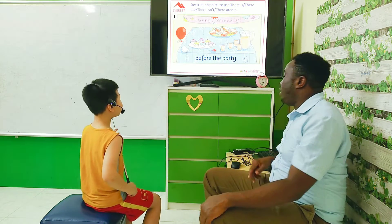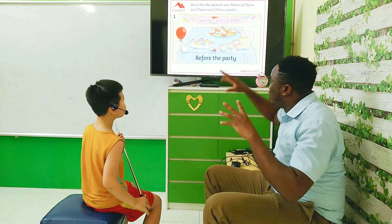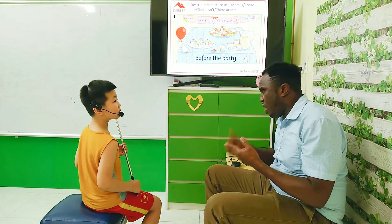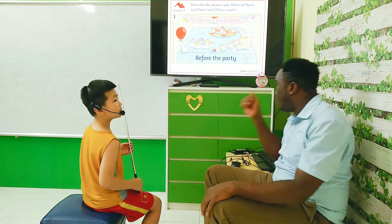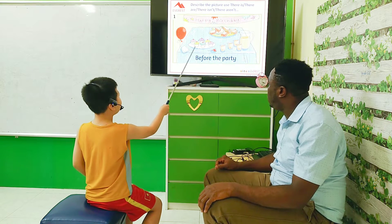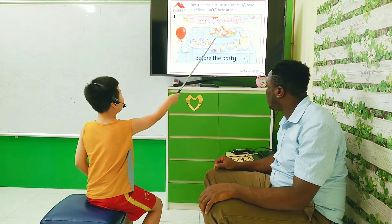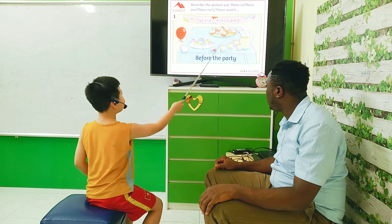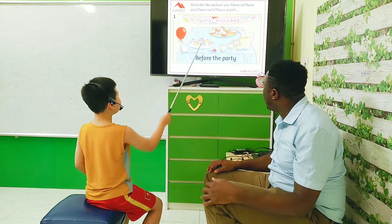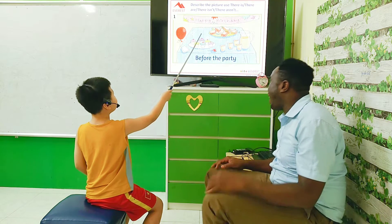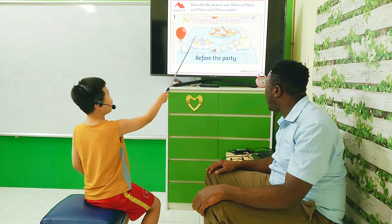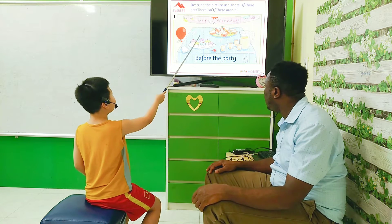Now let's move on to the next slide. This time I want you to describe this picture. What can you see? Use there is, there are, there isn't, and there aren't. There is a balloon. There is a table. There are some cakes. There are sandwiches. There are glasses of orange juice. There is a TV. There isn't any chocolate.